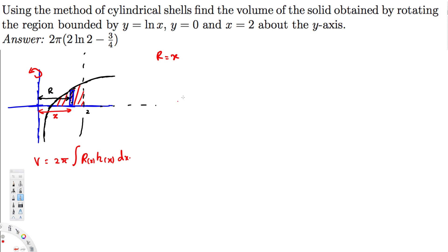Now let's find the height. The height is the top function minus the bottom function. The top function is y = ln x, and the bottom function is y = 0, so the height h = ln x - 0 = ln x.